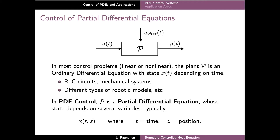On the other hand, in PDE control, the control system P is instead described by a partial differential equation whose state depends on other variables besides the variable T, time. For example, very typically a position variable is involved, but these other variables can have other interpretations as well. In addition, the model of the system — the partial differential equation — involves differentiation of the state with respect to both the time variable and the other variables as well.